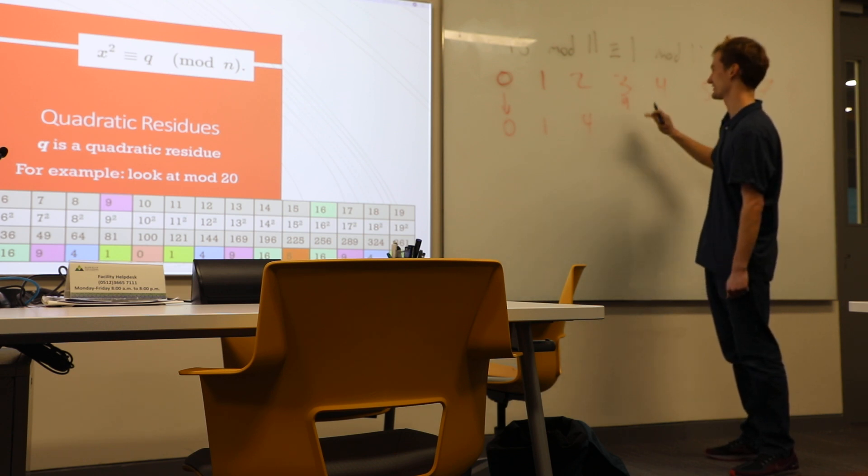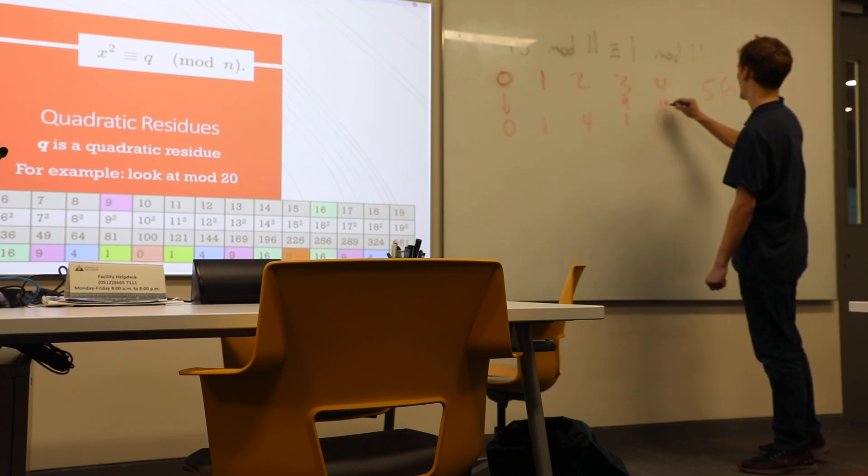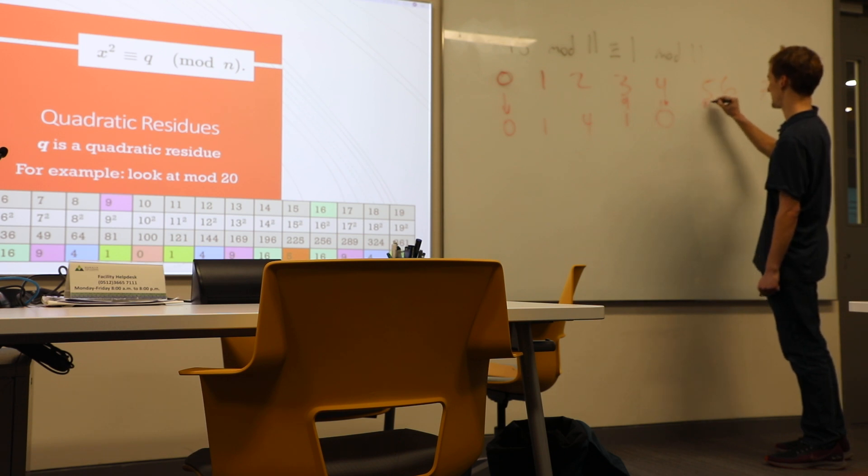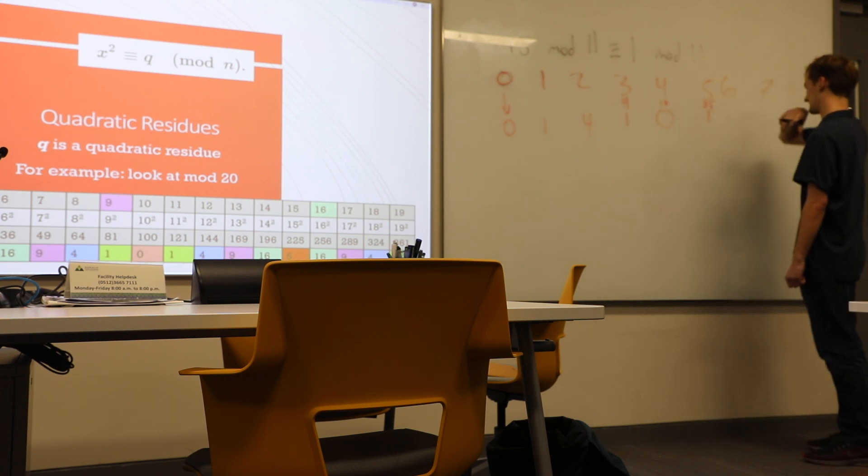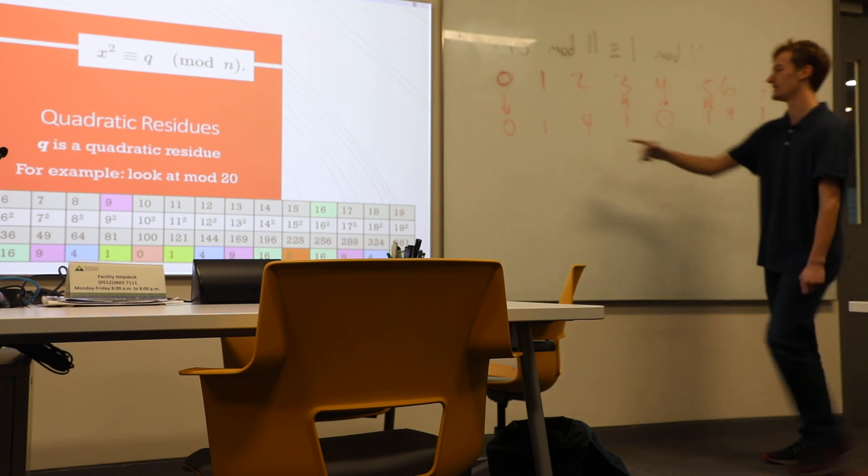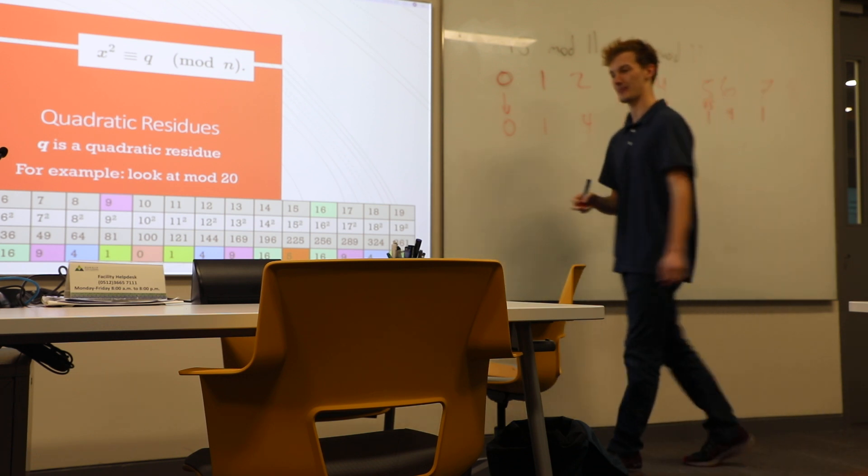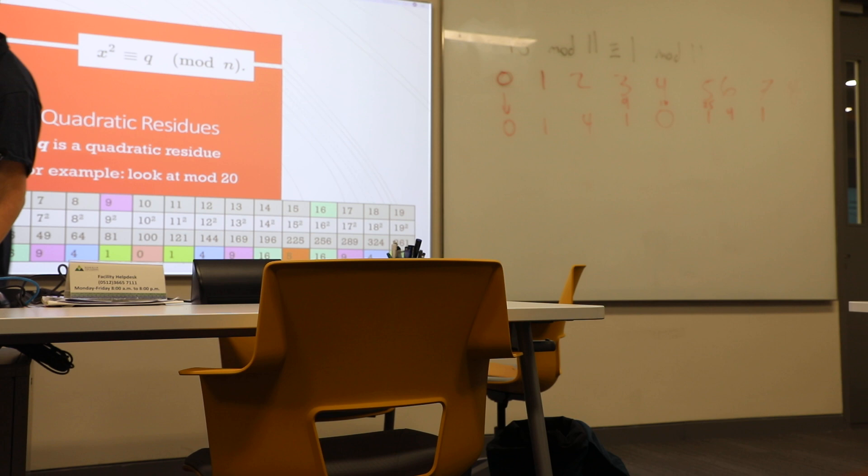This one goes to 9, but 9 is congruent to 1 mod 8. 16 is congruent to 0. And 25 is congruent to 1. And 36 is congruent to 4. And 49 is congruent... What is it congruent to? 1. There we go. So we basically have 0, 1, and 4 are the quadratic residues. And you can notice that, for example, 7 is actually minus 1, and 6 is minus 2, and 5 is minus 3. So when you square them, you get the same result. That's why you only have to count to 4, and then you can just stop.